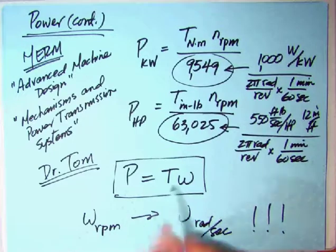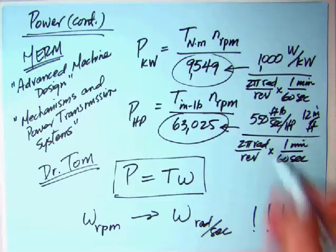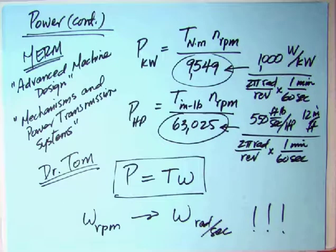Dr. Tom recommends using power equals torque times omega. Convert omega in RPM to omega in radians per second. You don't have to rename it as an N. It's omega, just like standard in all textbooks. And away you go, and then the units will work out naturally for you. You don't need these 9,549 and 63,000. Another one you see is 33,000, which is the 550 multiplied by 60.